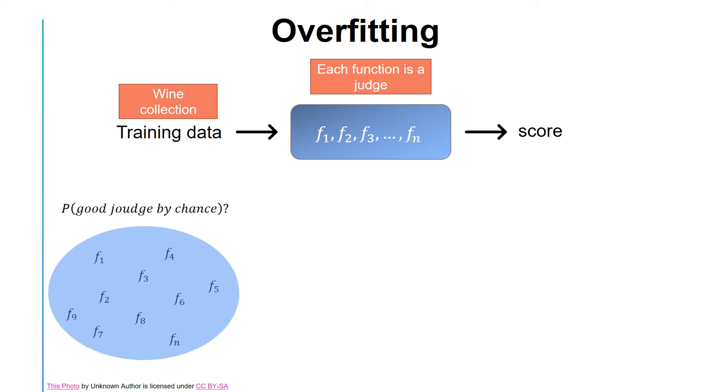If you have a large number of judges, it is more likely that somebody by chance performs well. Similarly, if I have a group of people and I ask each of them to toss a coin 10 times, our chances of obtaining 10 heads consecutively by someone in the group increases as the number of people increases.